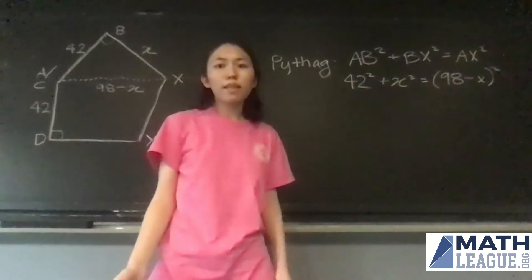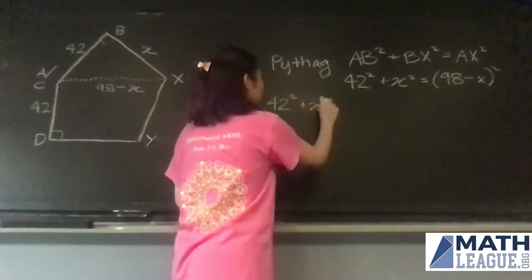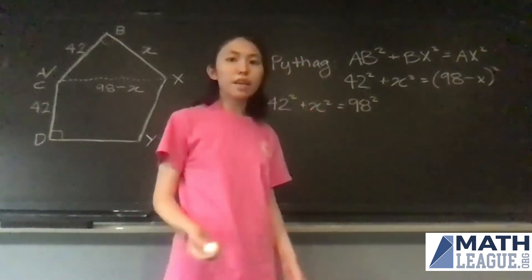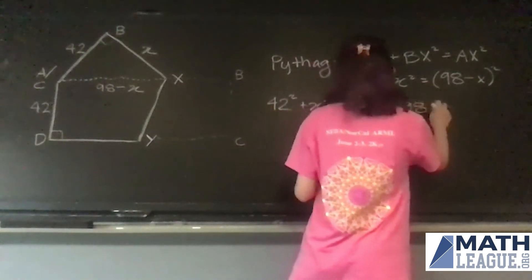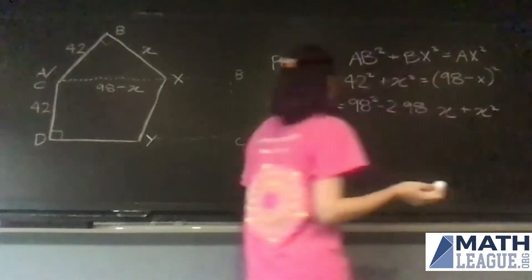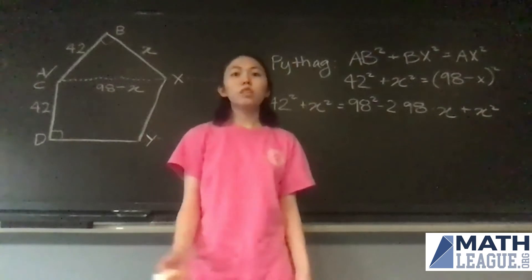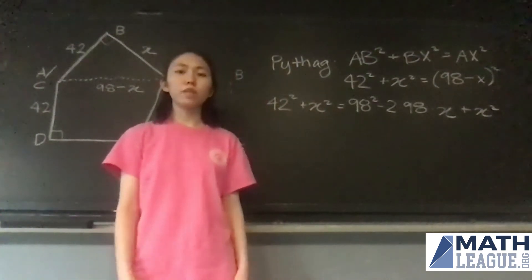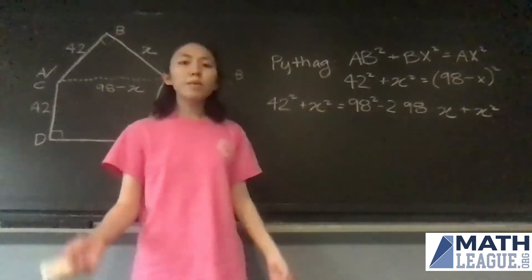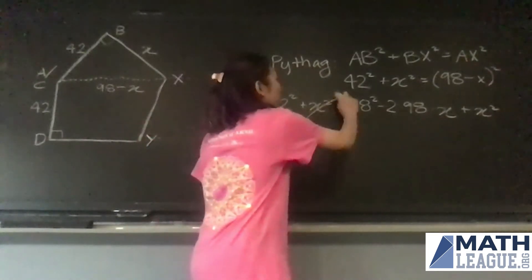Now let's expand this out. So 42 squared plus X squared stays the same. And our 98 minus X squared is equal to 98 squared minus 2 times 98 times X plus X squared. Now you may notice that I decided not to expand the numbers yet, because we might be able to cancel some stuff out right away. So what we can see right away is these two X squared terms, and X squareds now go bye-bye.